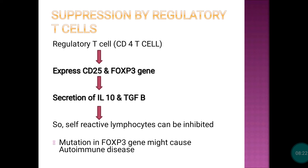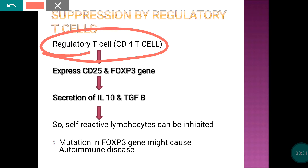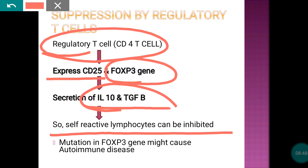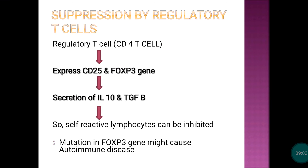The second mechanism is suppression by regulatory T cells. Regulatory T lymphocytes express two important markers: CD25 and the FoxP3 gene. These induce secretion of interleukin-10 and transforming growth factor beta, which inhibit self-reactive lymphocytes. If the FoxP3 gene is mutated, autoimmunity can develop due to failure of peripheral tolerance.